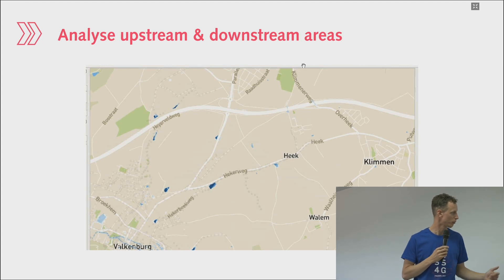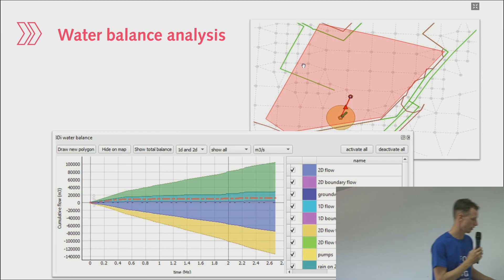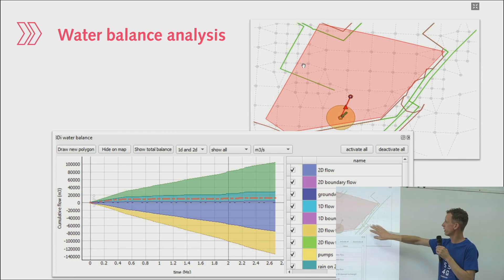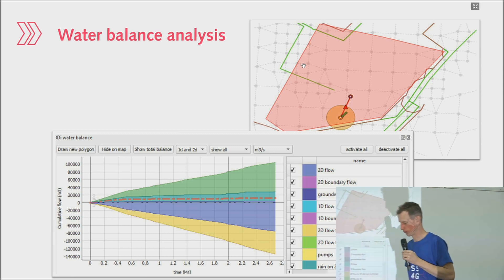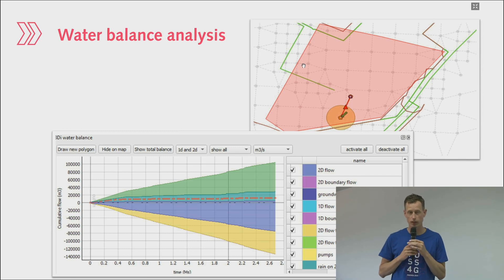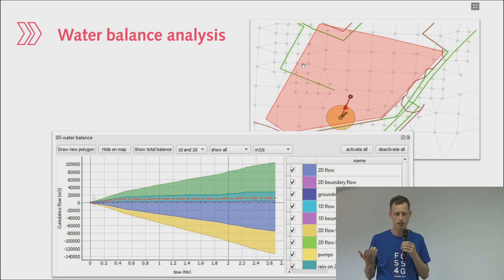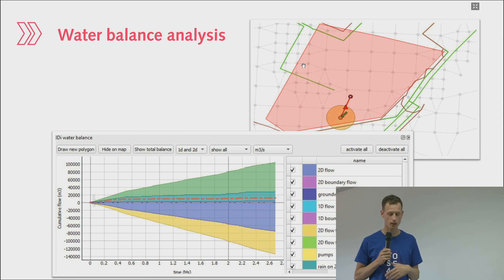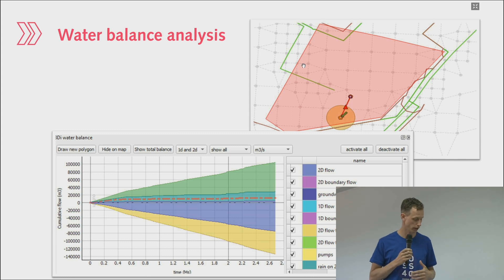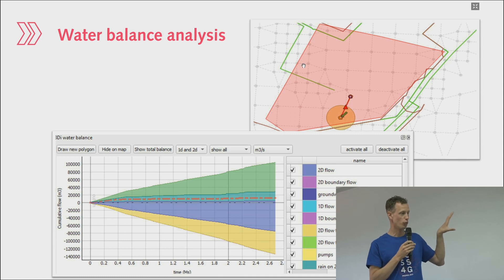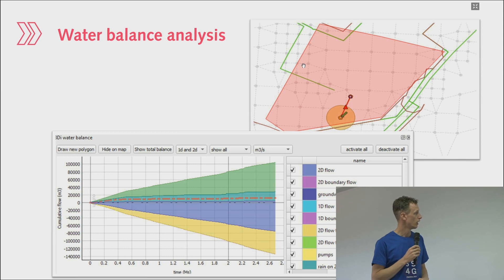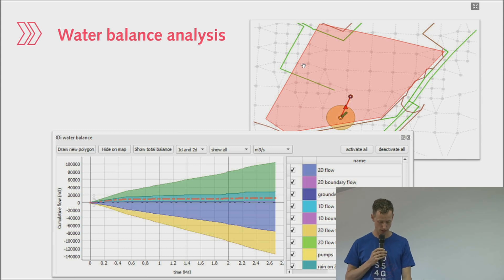A lot of other products build a whole new interface and end up replicating a lot of basic GIS functionality — but it will never be as complete as QGIS. So we did it the other way around: we recognized that most of what a modeler does is essentially GIS work, but with some extra specific functionalities needed. We provide those as plugins on top of QGIS.